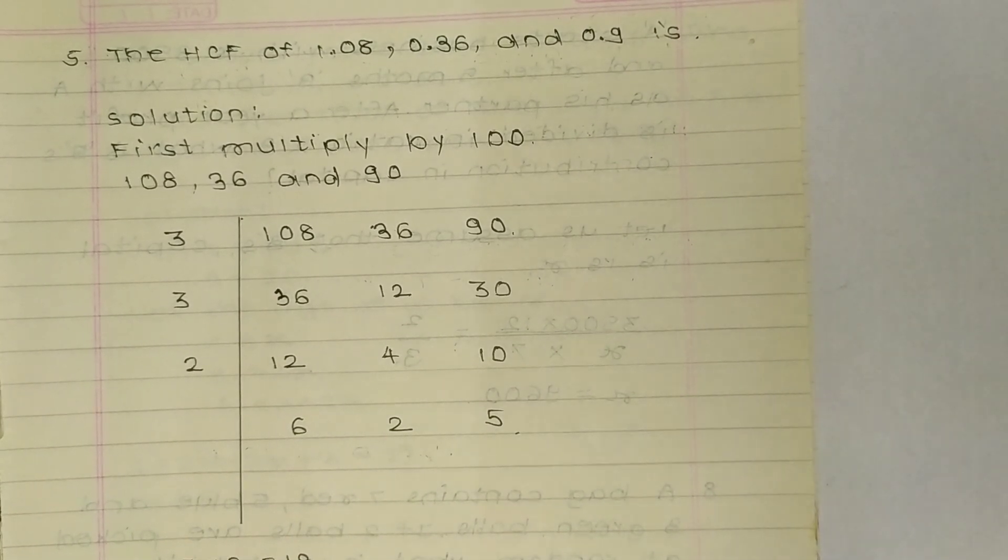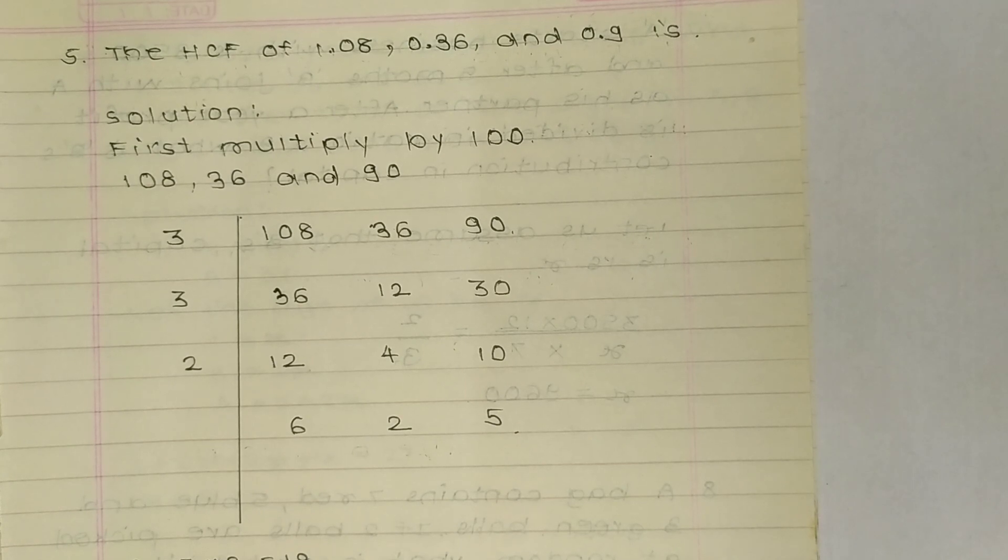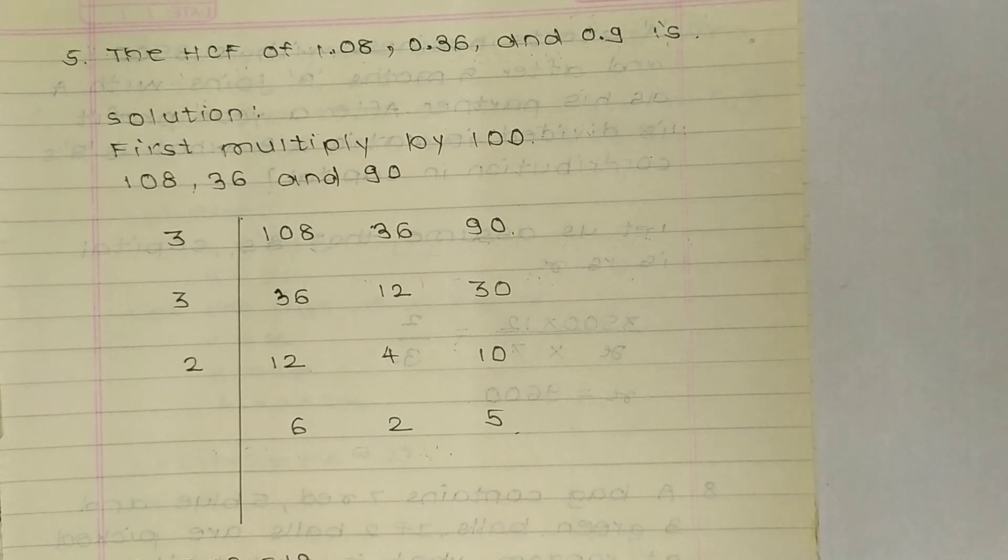1.08, 0.36, and 0.9. Solution: First multiply by 100, so 108, 36, and 90. Now write them: 108, 36, and 90.